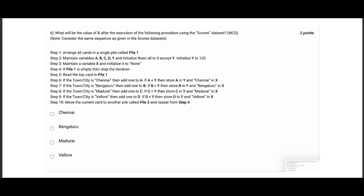Greetings everybody. Welcome to the part 2 video of graded assignment, computational thinking week 2. In this, we'll be covering questions from 6 to 10. So let us start the 6th question. What will the value of X be after the execution of following procedure on scores dataset? See here, except Y, we are initializing every variable that is A, B, C, and D, all of them to zeros. So we are done with the first 3 steps. 4th step, pile 1 is empty, stop the iteration. Read the top card in pile 1.